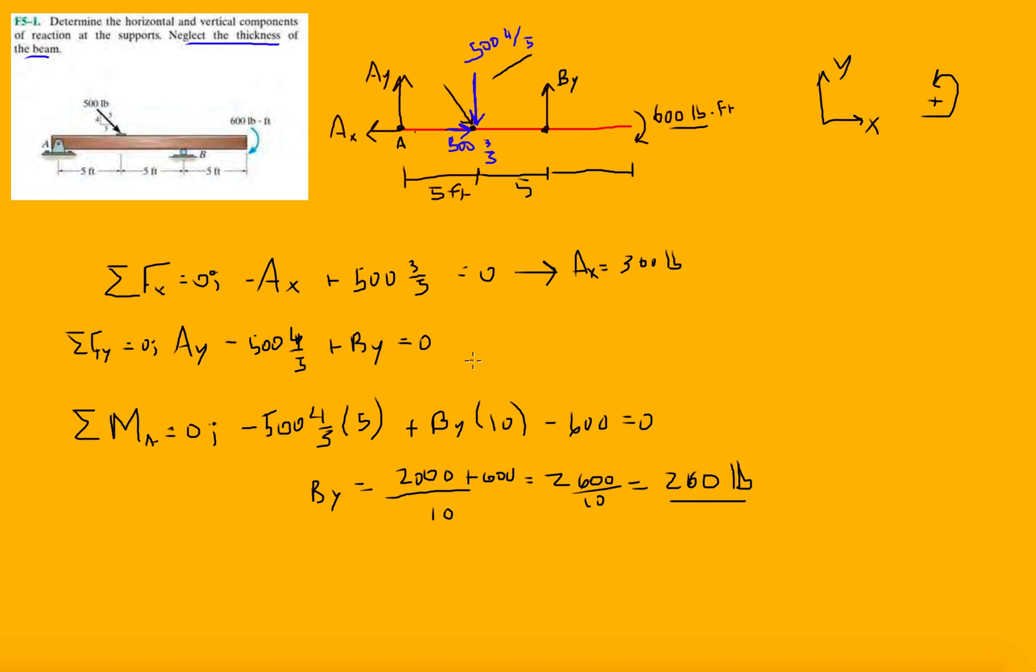We're getting there. And now, going back to our ΣFy equation, we have Ay is equal to, let's see, this is 400, right, minus By, so minus 260, and let's see, 400 minus 260, so we have 140 pounds. All right. And yeah, so those are the reactions.